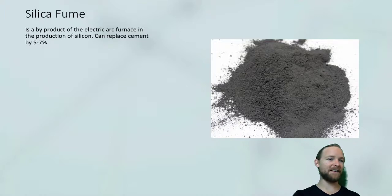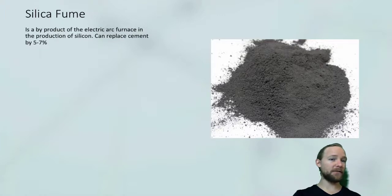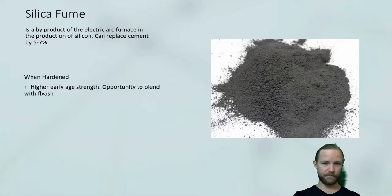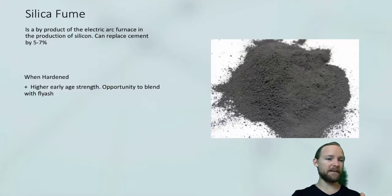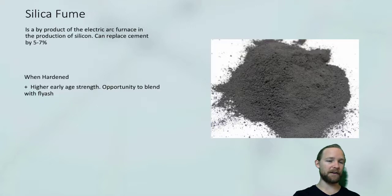The next material is silica fume, which is quite different to the first two. It is a by-product of the electric furnace in the production of silicon, and it typically replaces cement by 5% to 7%. When hardened, there is high early-age strength. Due to the nature of silica fume, it blends well with fly ash, so you can actually get high early strength for the concrete.